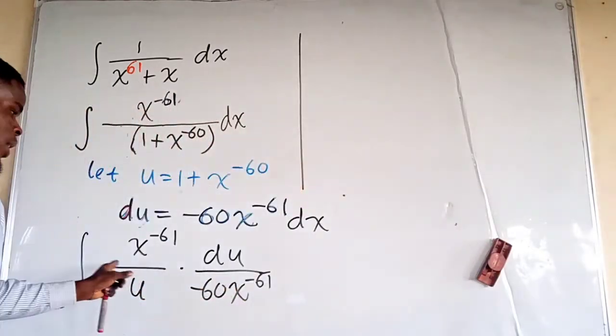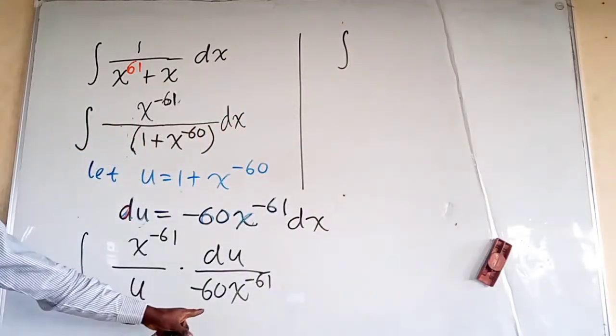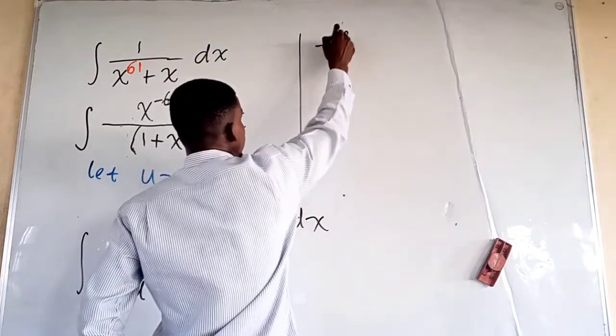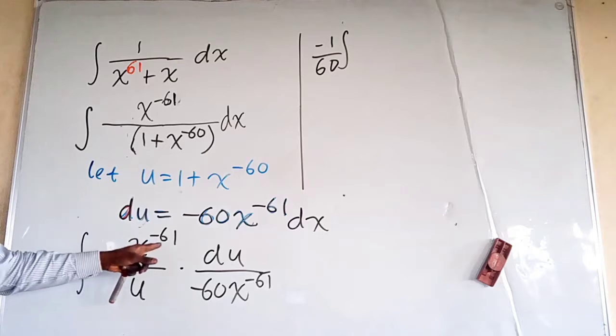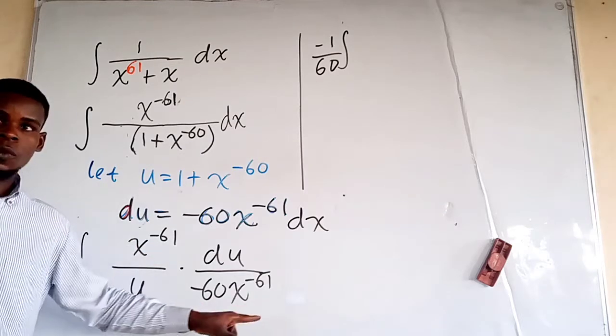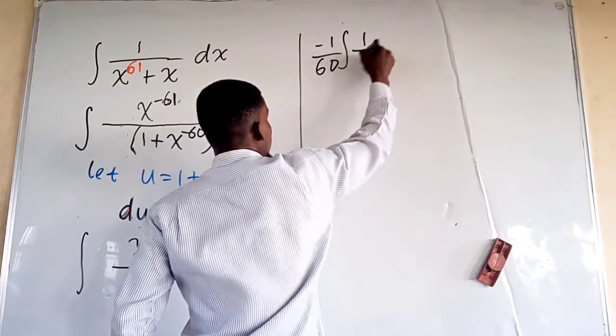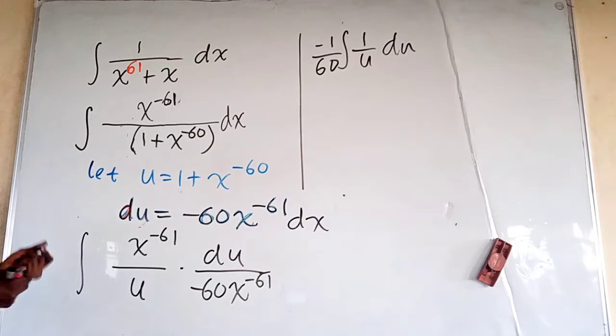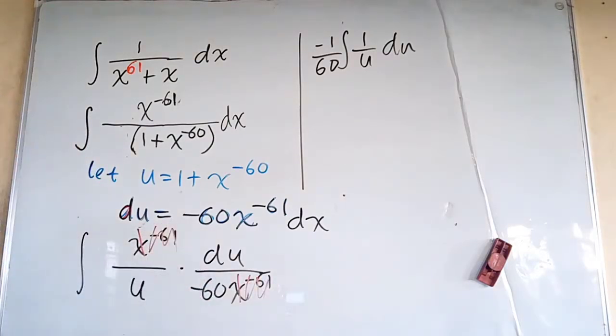Let's simplify things from this integral sign and see what we have. Here we have the integral of—well, this negative 60 is in the denominator so we can put it outside, that will be negative 1 over 60. And we see that x to power negative 61 and x to power negative 61—they are the same, we cancel them out, and we are going to have 1 over u du.